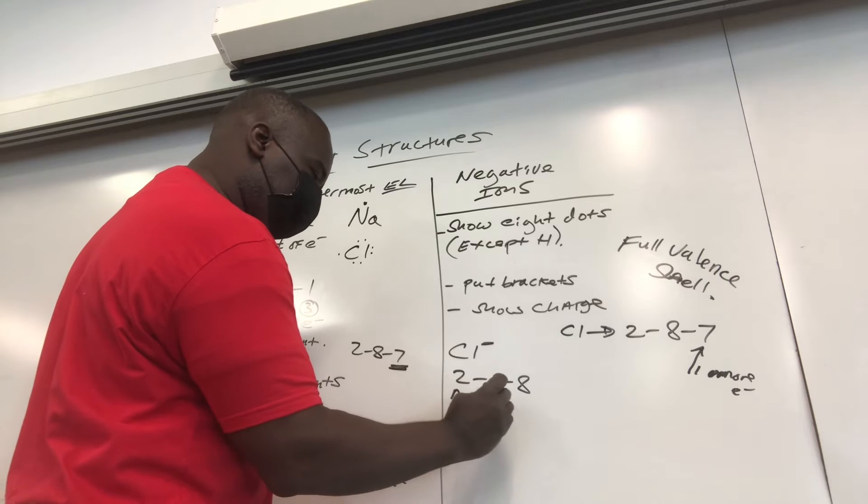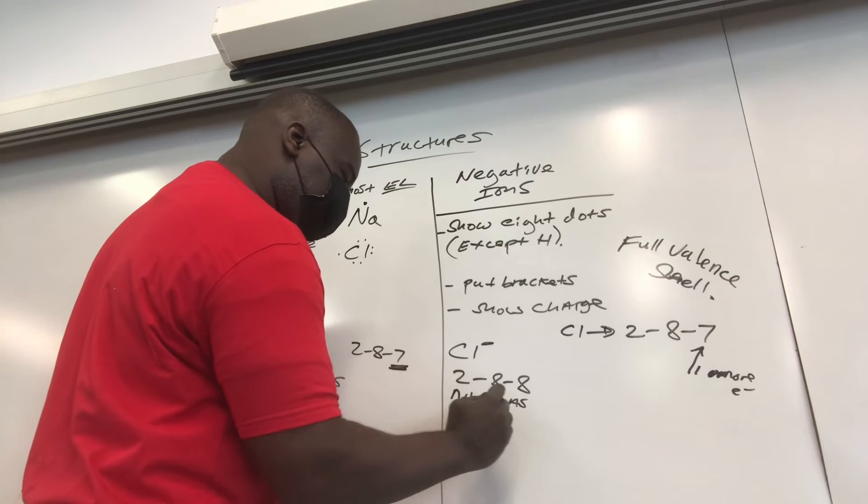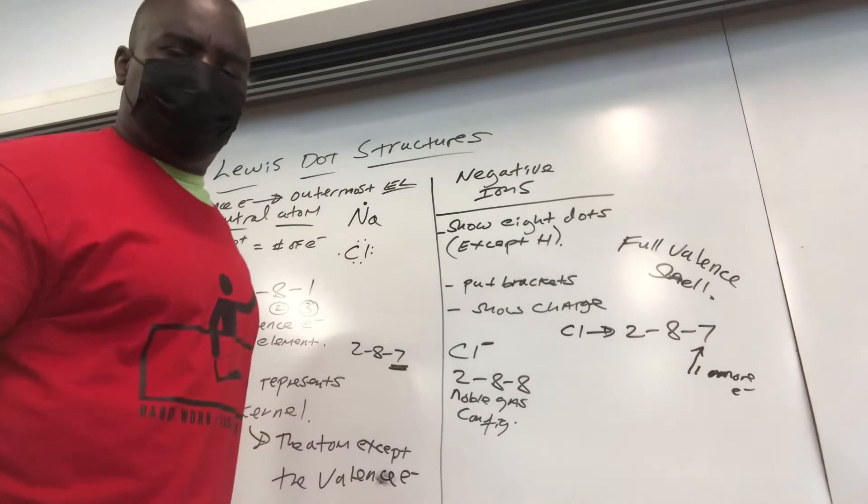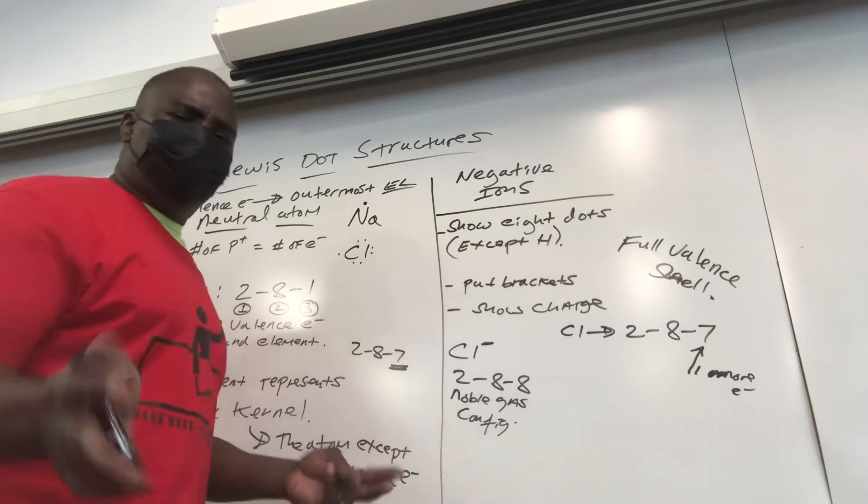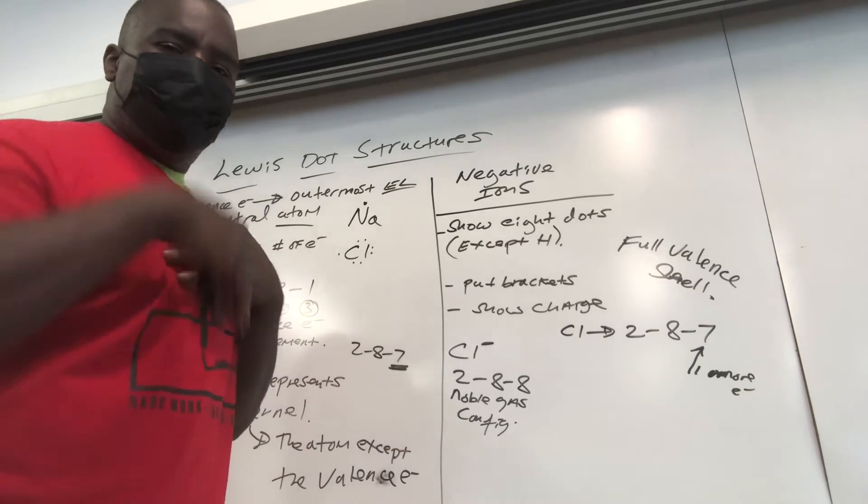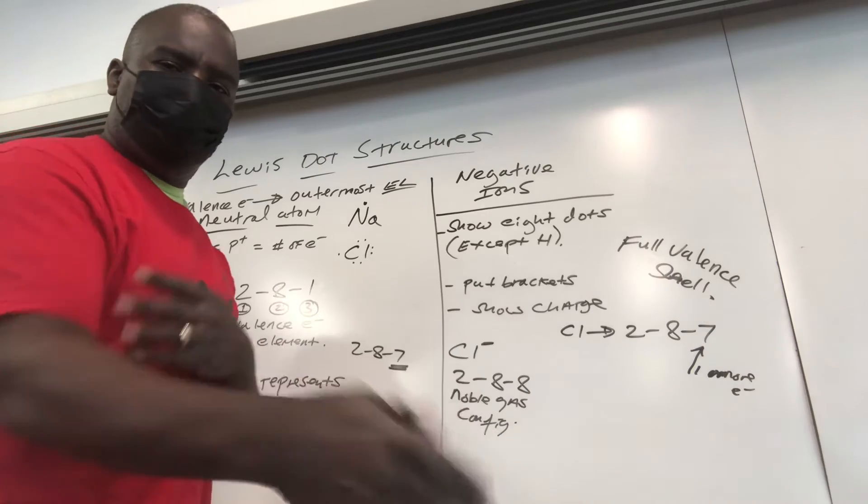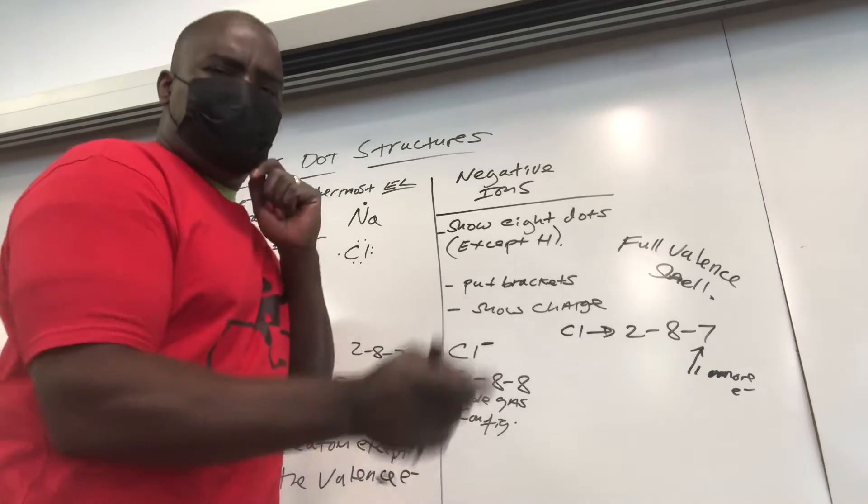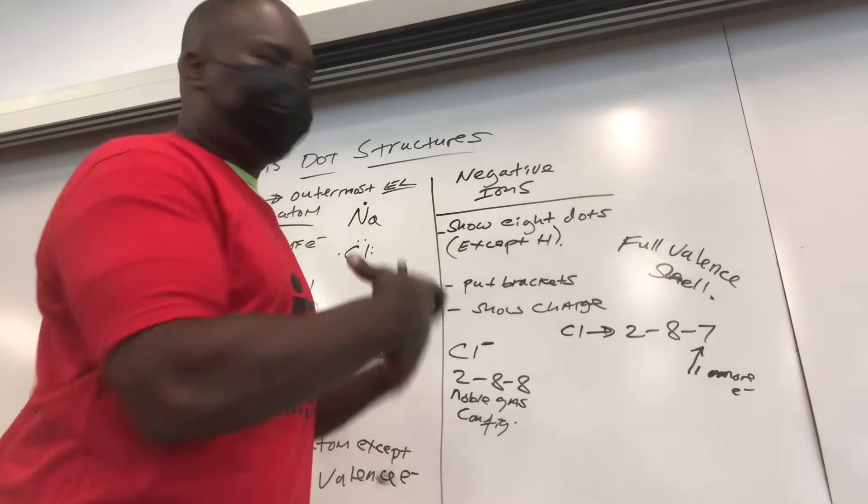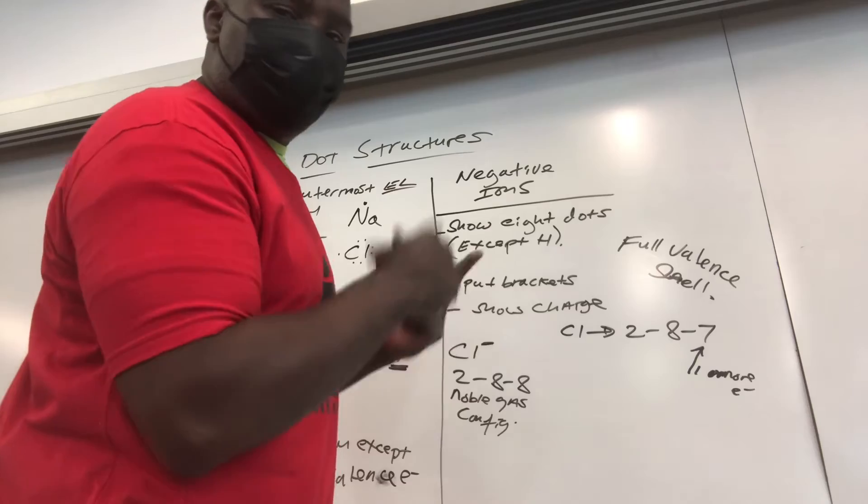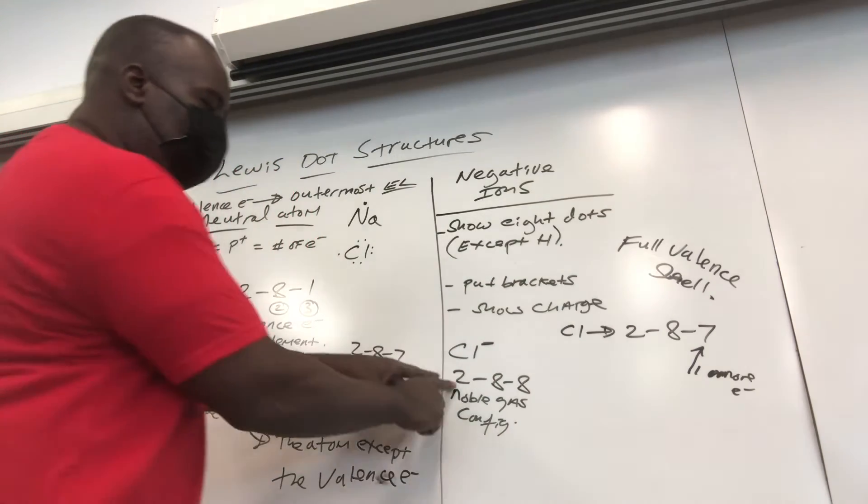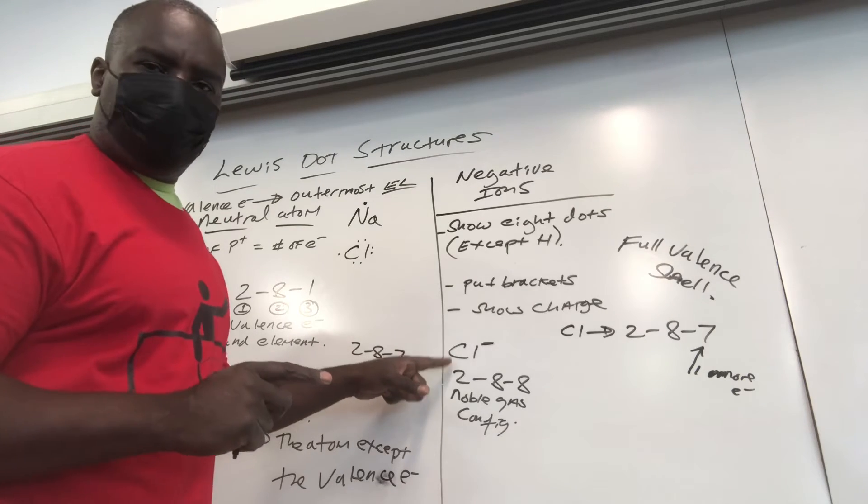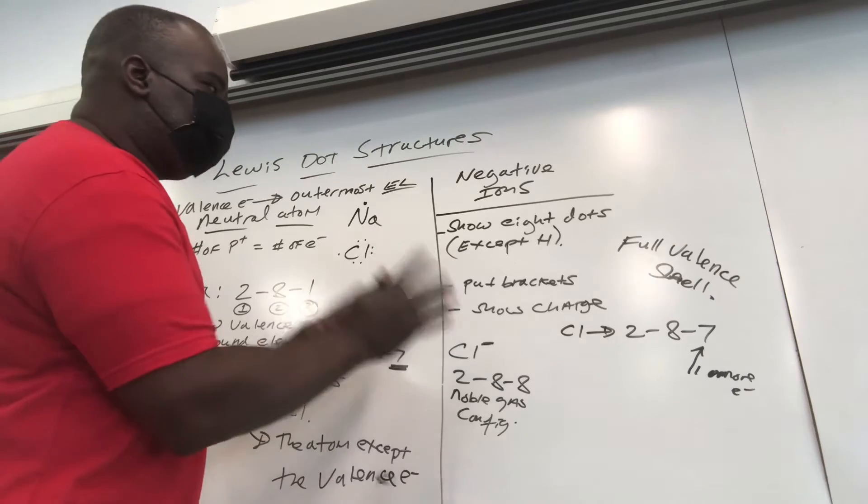Now this has a special name. It's called a noble gas configuration. Why do they call it that? Because its behavior is like the guys in group 18 called noble gases. Now once again, my students, we didn't do all this yet. Don't panic. It's not on the test. But later on when we get to periodic table, we'll talk about the group names and noble gases.